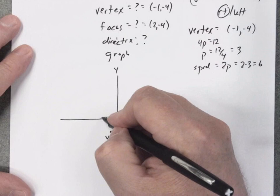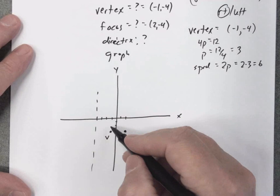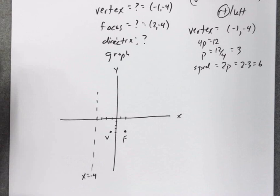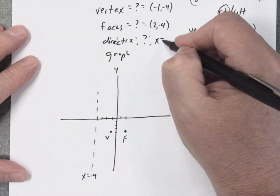Now the directrix, I'm going to move 3 to the left. If I'm sitting here at -1, I'm going to go to -4. So this vertical line is x equals -4. So that's my directrix.